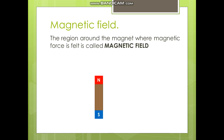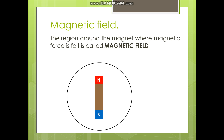What is a magnetic field? A magnetic field is the region or area around a magnet where we can feel a magnetic force. The region around the magnet where magnetic force is experienced is called the magnetic field.